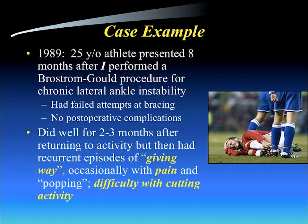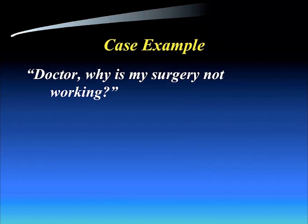Here is a case example. I did a procedure on a 25-year-old athlete in 1989. We did the standard Brostrum-Gould procedure for chronic lateral ankle instability, with no underlying cavus varus and after failed prior attempts at bracing. The surgery went well with no postoperative complications. But at three months postoperative, he returned with recurrent episodes of giving way, occasionally with pain and popping, persistent instability, and difficulty with cutting maneuvers.